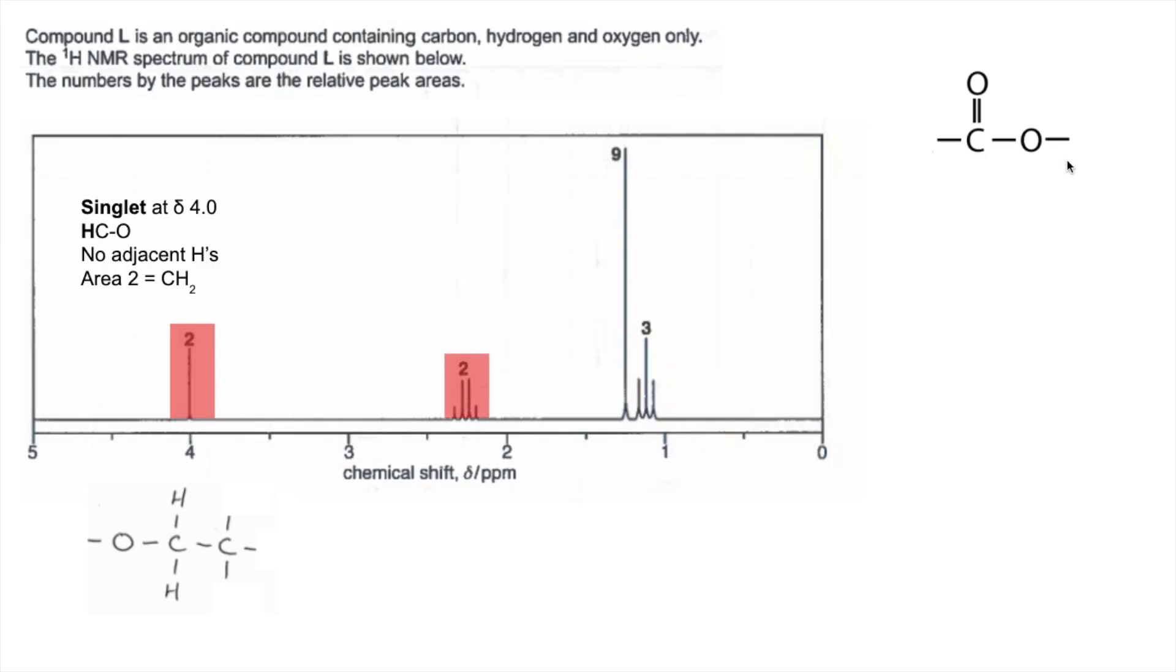So the next peak is this one here, so that's a quartet. It's the H-C-C=O environment, so in other words a carbon here with H's on, so H-C-C=O, so we're starting to build up this left hand side now.